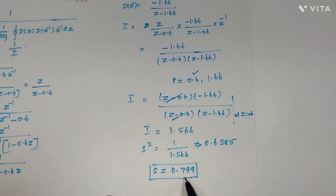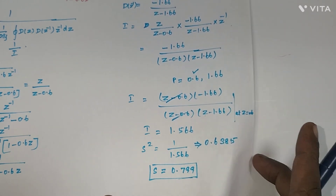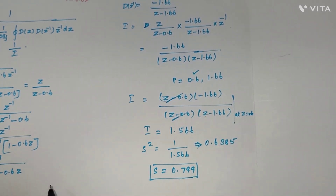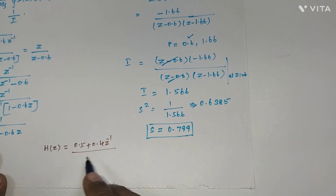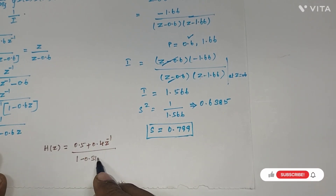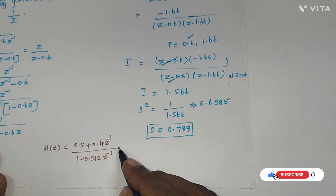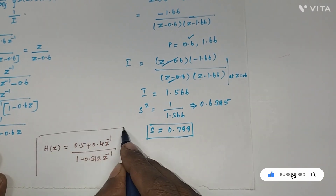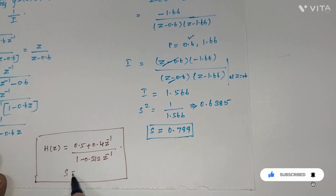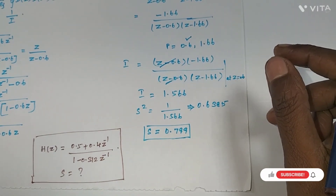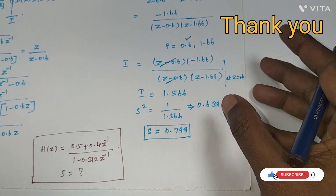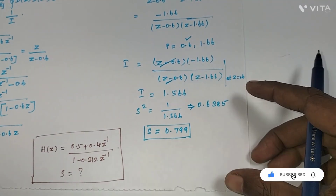Take down one assignment problem: for the given transfer function H(z) = (0.5 + 0.4 z⁻¹) divided by (1 minus 0.312 z⁻¹), find the scaling factor to avoid overflow and limit cycle oscillation. Solve this problem and post the answer in the comment section. Thank you so much for listening — for more problems, subscribe to our channel.